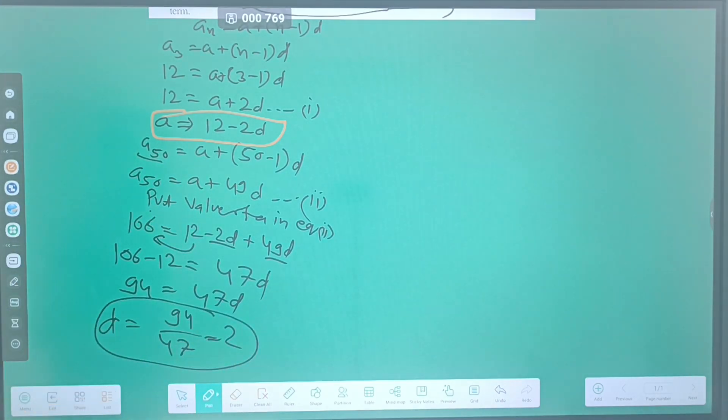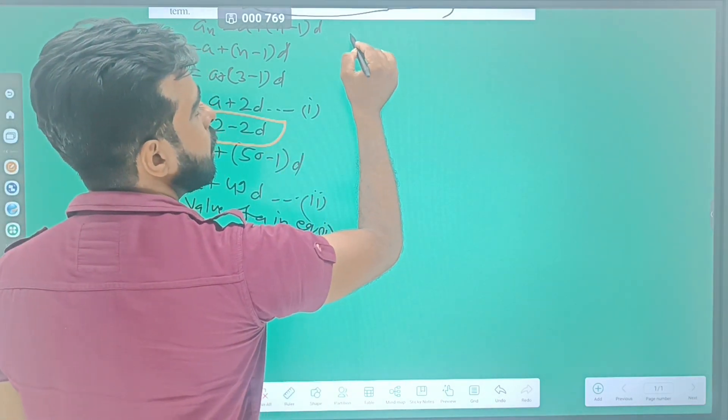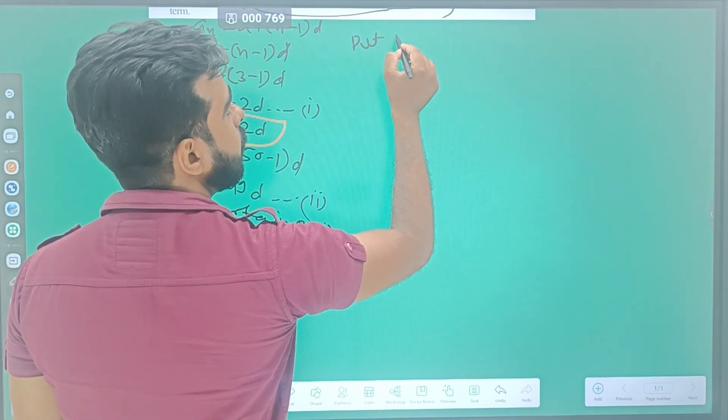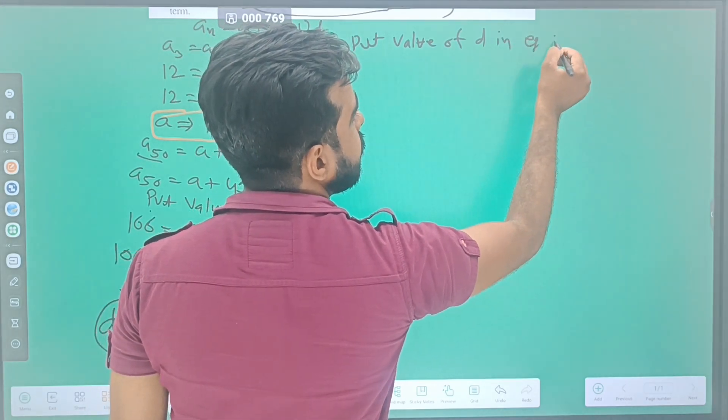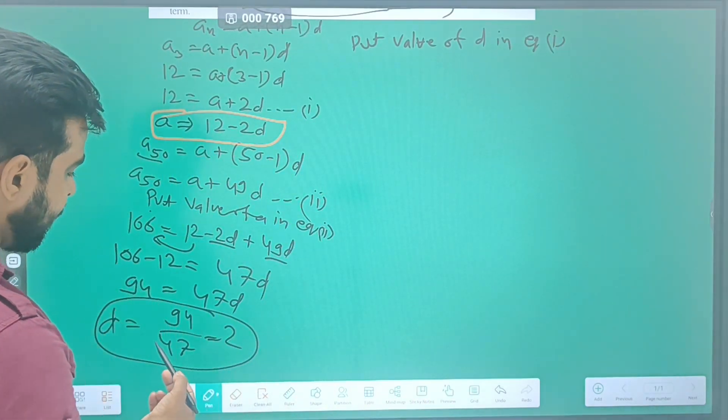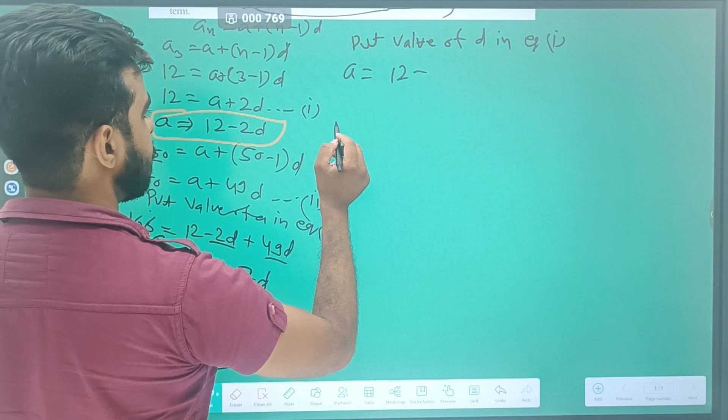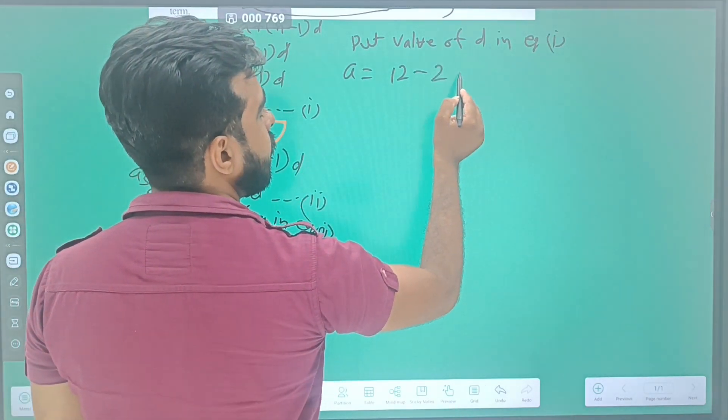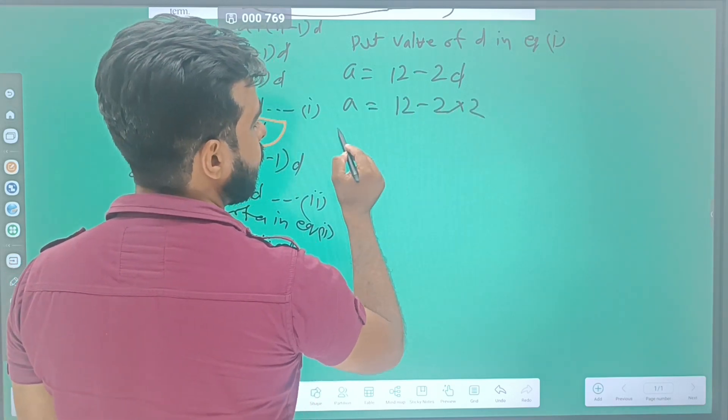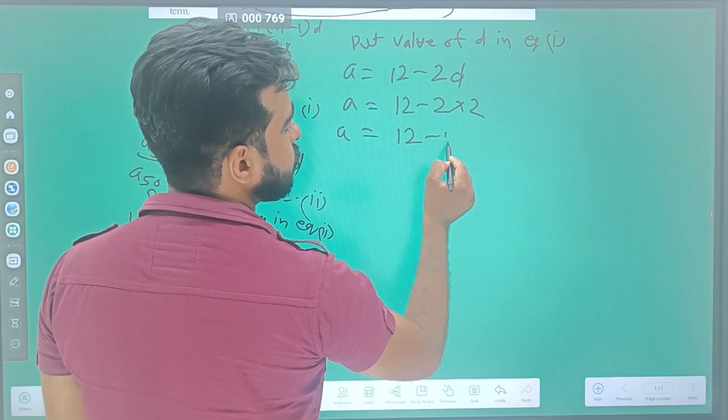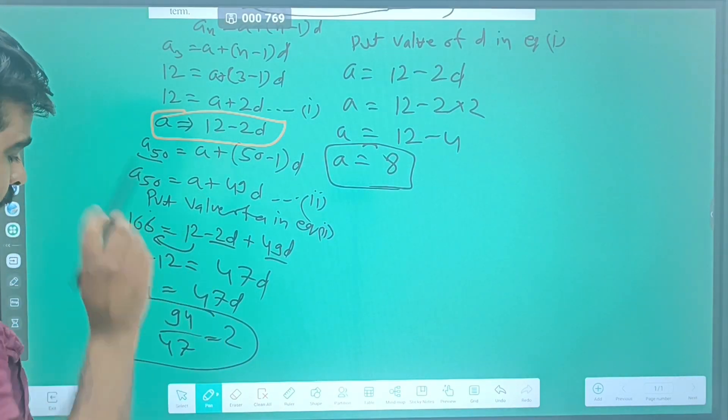We have found the value of d. Now we have to find the value of a. Put the value of d in equation 1. a = 12 - 2d = 12 - 2(2) = 12 - 4 = 8. The value of a = 8.